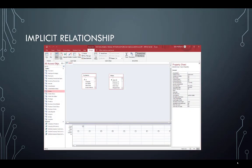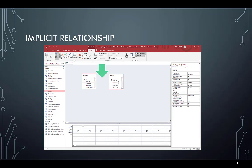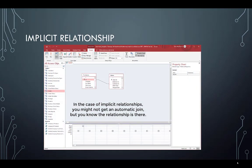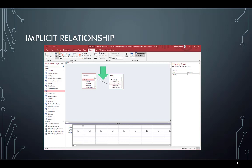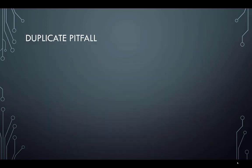In an implicit relationship, we might pull our customers and orders tables onto our query and there's no join. What we would do is drag the ID column from the customers onto the customer ID in the orders, creating our inner join. We need to do that ourselves because the relationship was implicit and was not defined in the database.